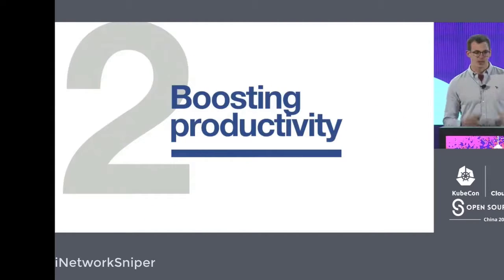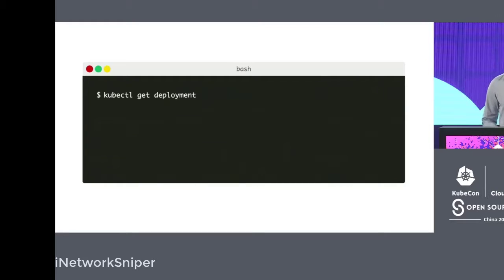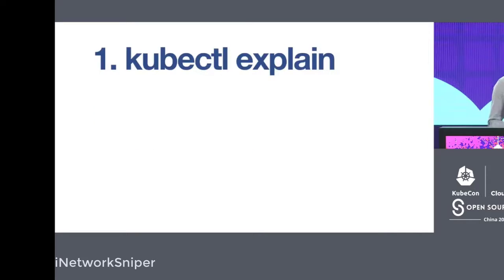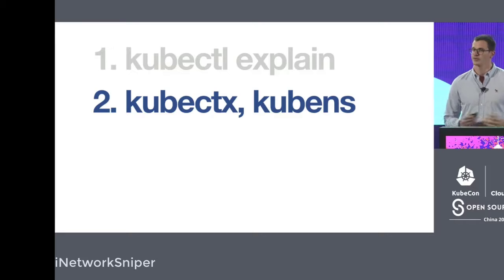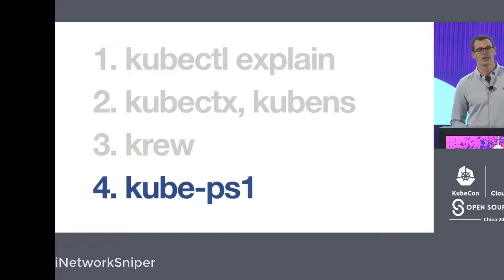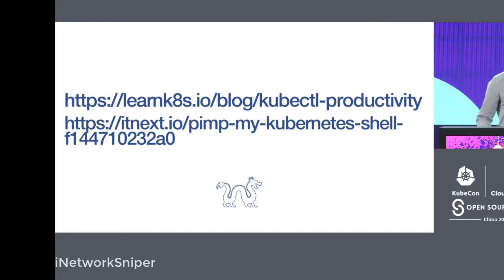Tip number two is pay attention to your productivity when you use the command line. We spend a lot of time typing commands such as kubectl get pods, so it makes a big difference if you have your command line optimized. That doesn't just mean using kubectl auto-completion — it also means knowing what to search in documentation with kubectl explain, using tools to change context and namespace quickly, using kubectl to manage your plugins, or a terminal prompt to get the current status of the cluster at a glance. A couple of links on screen if you're interested.